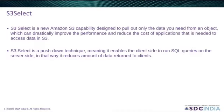S3 Select is a new Amazon S3 capability designed to pull out only the data you need from an object. This can drastically improve performance and reduce the cost of applications that need to access data in S3. The user gets the advantage of virtually storing all the data in one place and also the ability to selectively query the data.